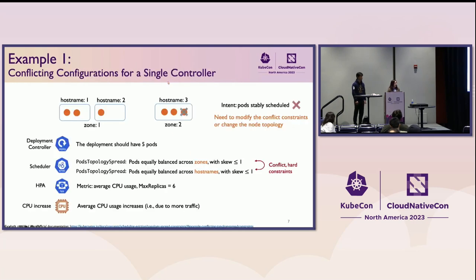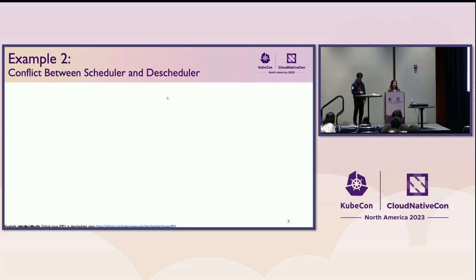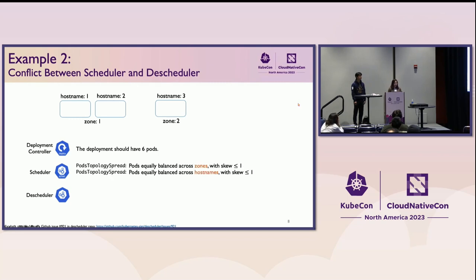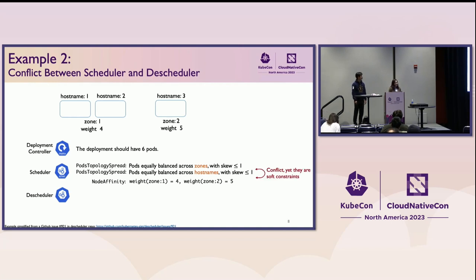The next example is caused by interactions between controllers, collected from a GitHub issue. Using the same topology, the deployment tries to have six pods with the same scheduler configuration. They are configured with one more plugin — node affinity — trying to prefer zone two over zone one with a higher weight. The constraints conflict even between plugins: node affinity prefers some nodes while topology spread tries to evenly balance pods. Since the operator may treat it as a soft constraint, they can still be successfully scheduled. The hostname-level policy is not satisfied — the skew is three minus one, which is two.